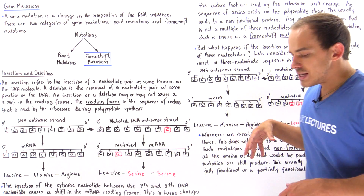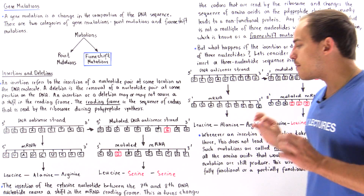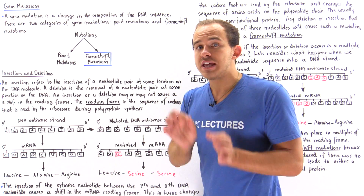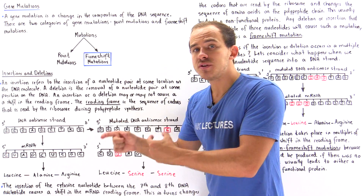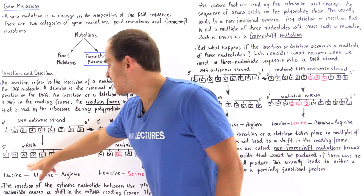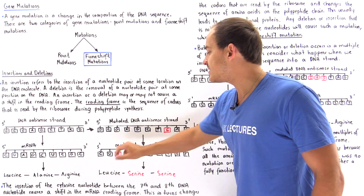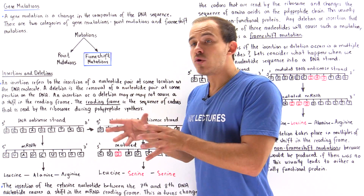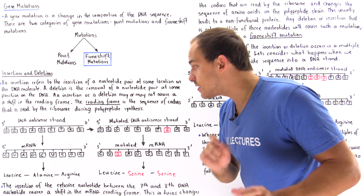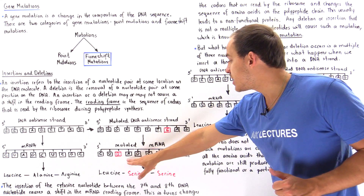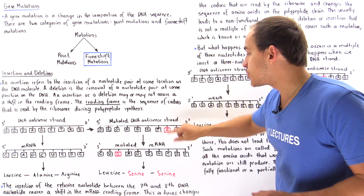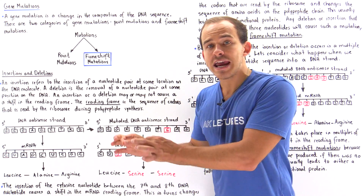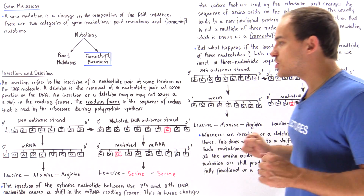When our ribosome reads this mutated mRNA strand using the genetic code, because we have a shift in the reading frame, the codons will change. The first codon is CUG — since CUA and CUG both code for leucine, the first amino acid is unchanged. But because we inserted this single nucleotide, it shifts all the other nucleotides and changes the codons read by the ribosome.